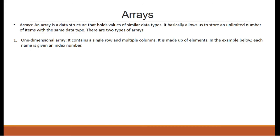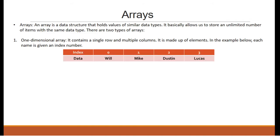One-dimensional array: it contains a single row and multiple columns, and is made up of elements. In the example below, each student name is given an index number. So if we are asked to print student name at index 2, we will get the name Dustin, since his index number is 2.